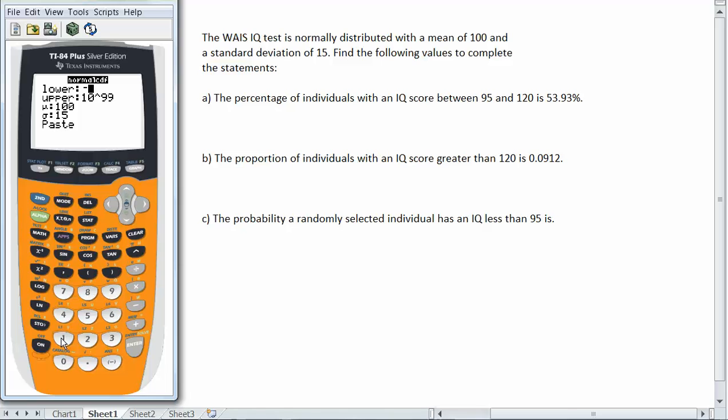And then I'm going to say negative 10 to the 99th power, and that will simulate negative infinity. Now my upper limit is 95, my mean is 100, and my standard deviation is 15.